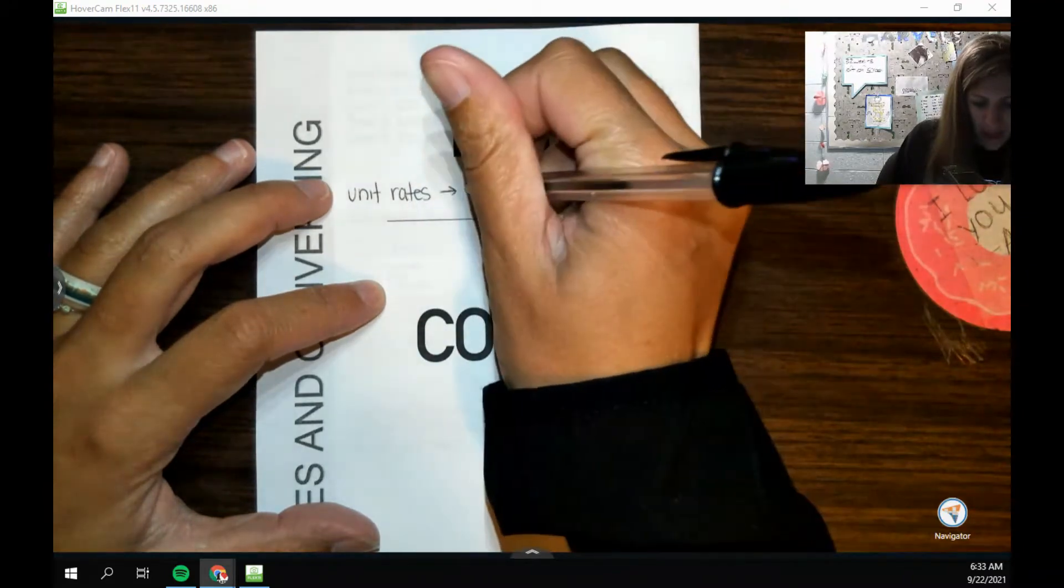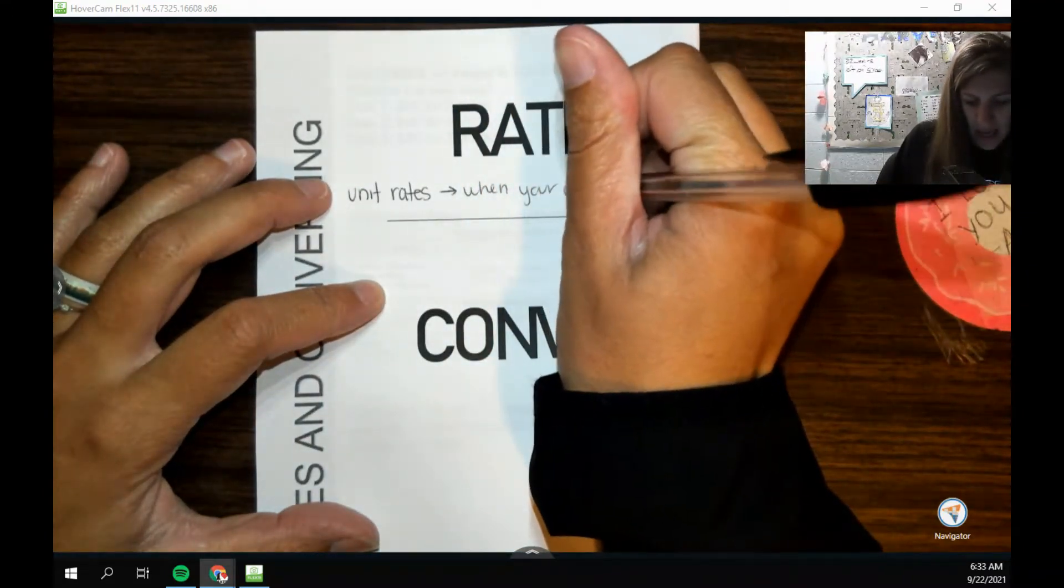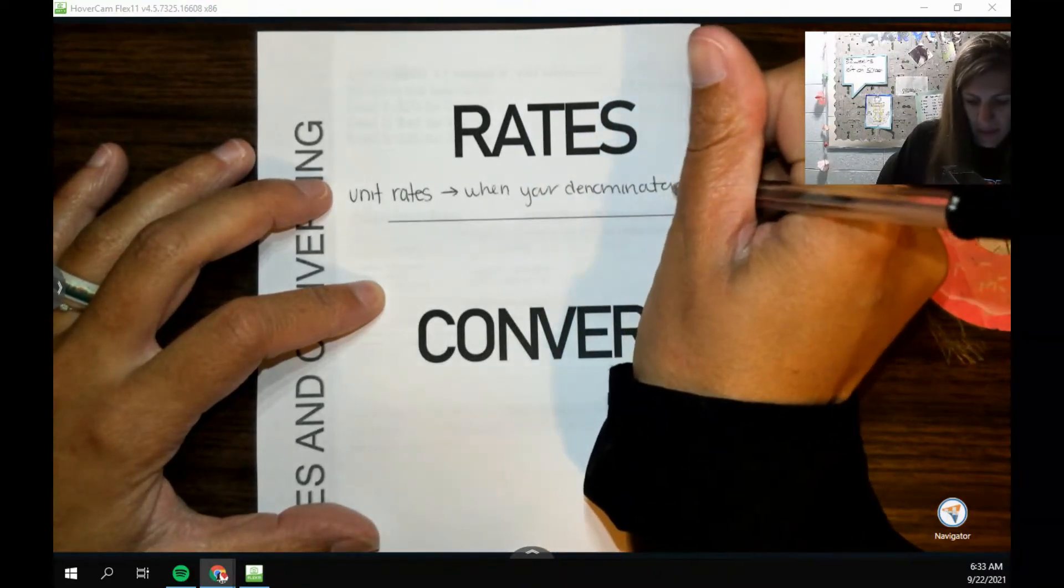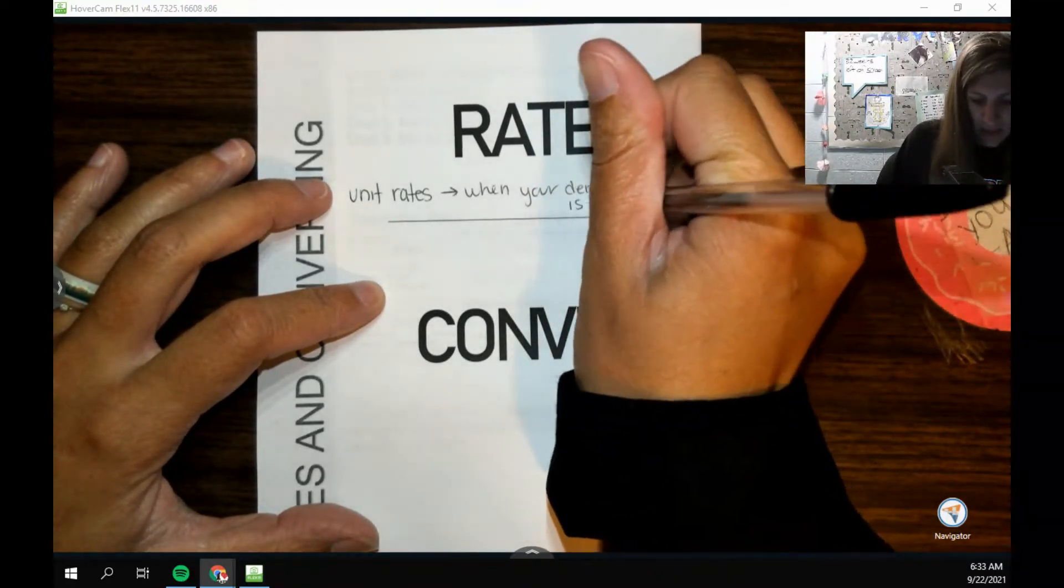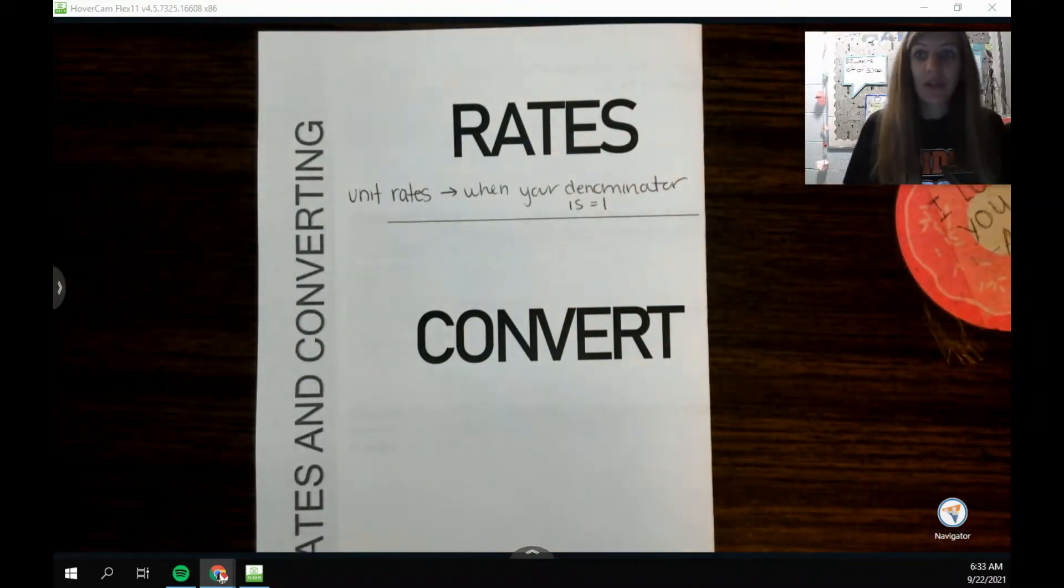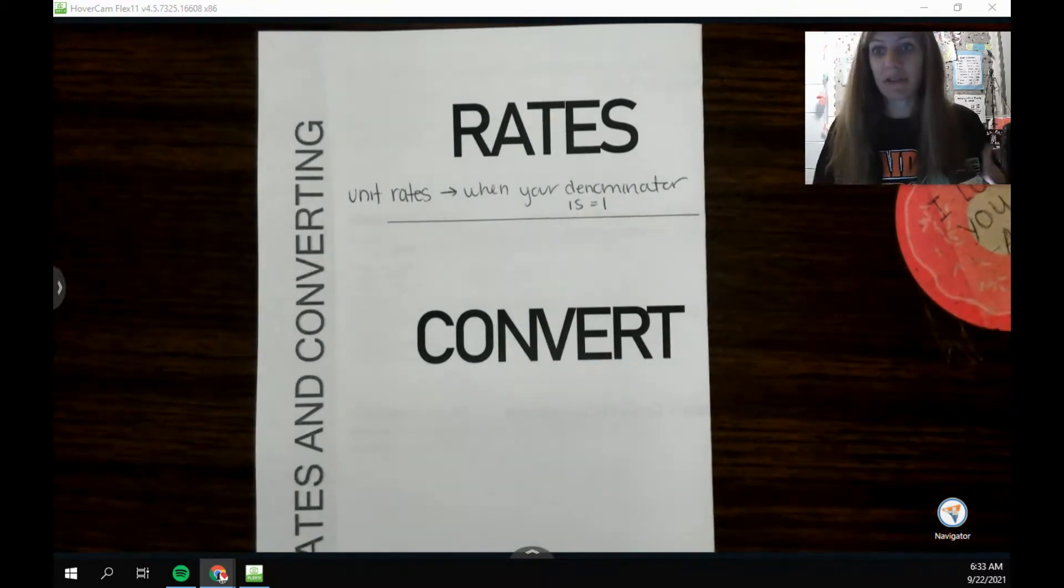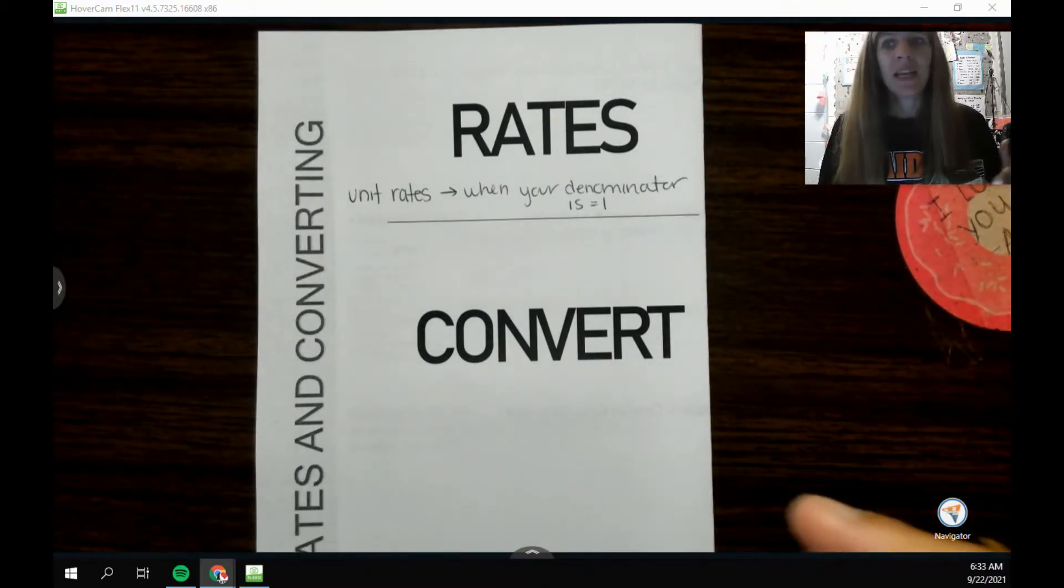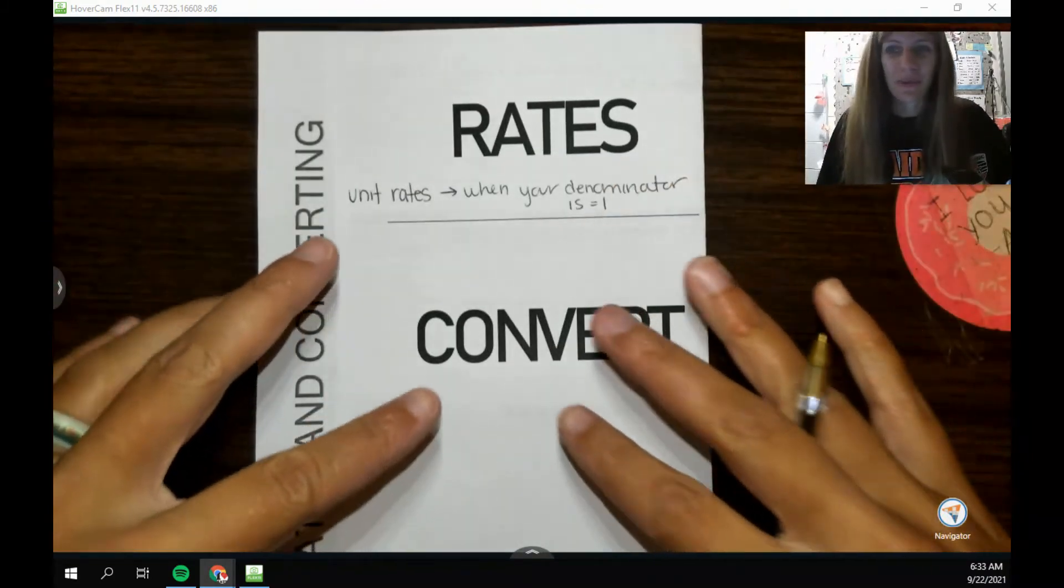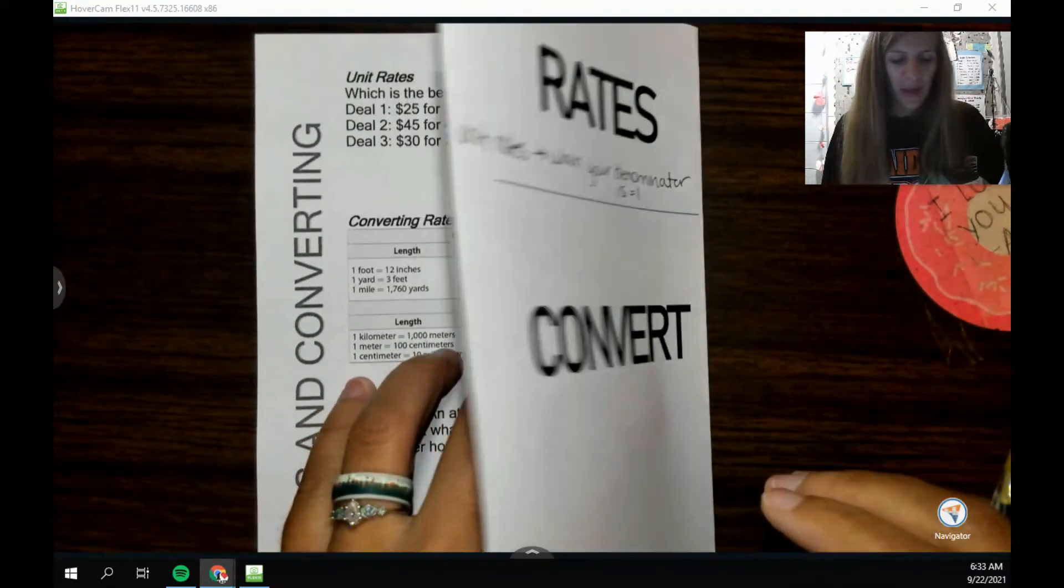A unit rate is when your denominator, the bottom of the fraction, is equal to one. Really what a rate is, is a fraction reduced. But in the case of a unit rate, we want to reduce down to a denominator of one, even if that means we get a decimal.